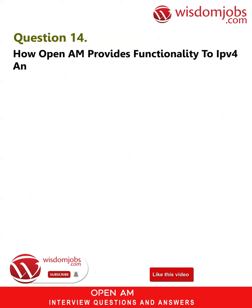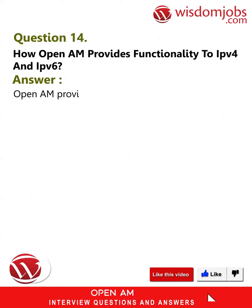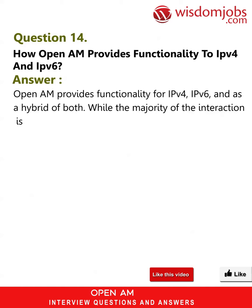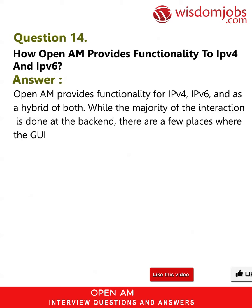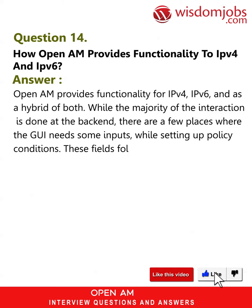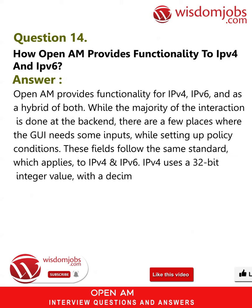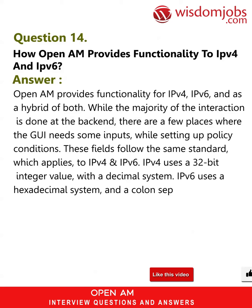Question 14: How does OpenAM provide functionality for IPv4 and IPv6? Answer: OpenAM provides functionality for IPv4, IPv6, and as a hybrid of both. While the majority of the interaction is done at the backend, there are a few places where the GUI needs some inputs when setting up policy conditions. These fields follow the same standard: IPv4 uses a 32-bit integer value with a decimal system, while IPv6 uses a hexadecimal system and a colon separates the eight groups of hexadecimal digits.